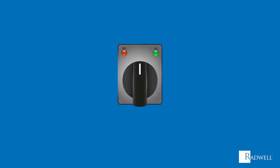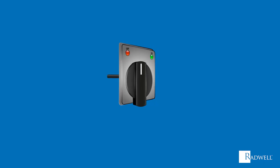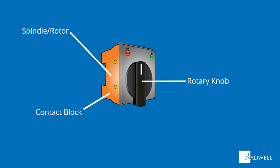To provide a better understanding of how these switches work, let's review the main components of a selector switch. With the fundamental design, selector switches consist of a spindle or rotor with a protruding spoke, a rotary knob attached to the spindle or rotor, and a contact block which holds it all together.